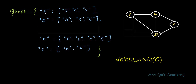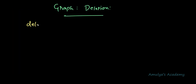For example, first I check the value of key A — C is present there, so I remove it. Next I check key B — C is not present, so no deletion needed. Then I check key D — C is present, so I remove it from that list. Then I check the remaining keys and if C is present in their values, I delete it from those lists.